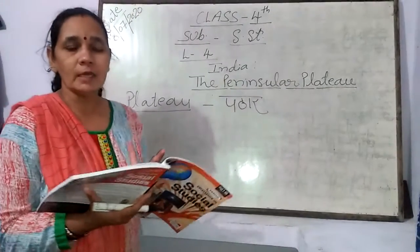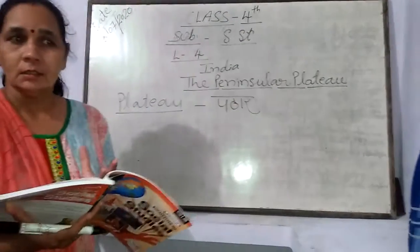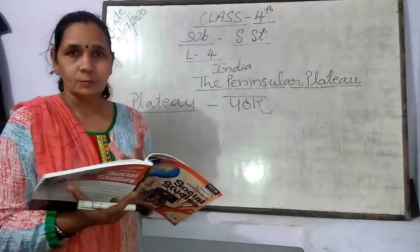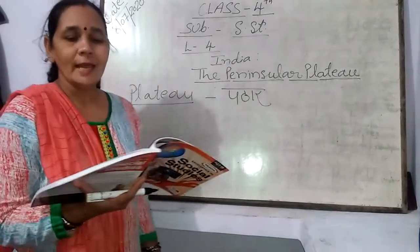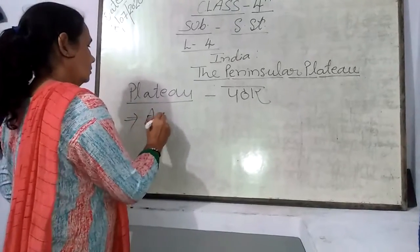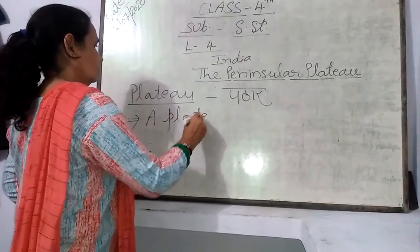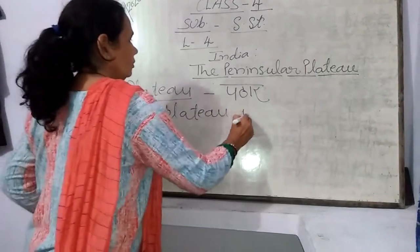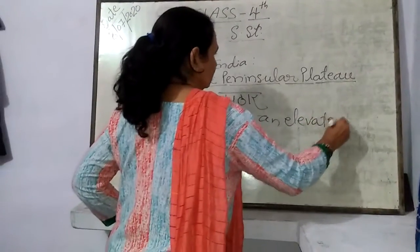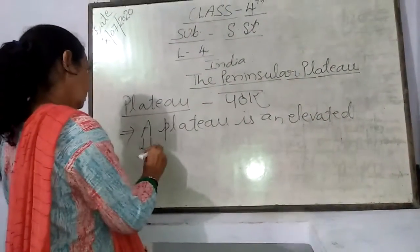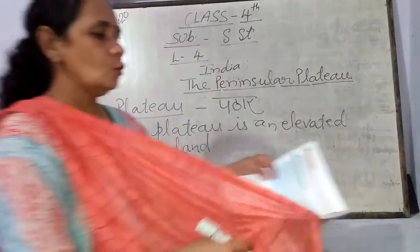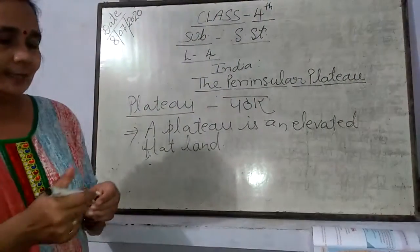There are many landforms that come to our Earth, like plains, mountains, oceans, and a plateau. A plateau is an elevated flat land. It means a plateau is an elevated flat land, which is called Pathar.